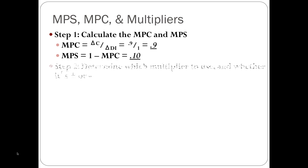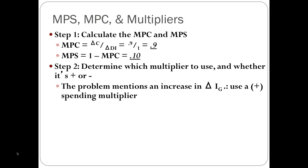Next, we have to determine which multiplier to use and whether it's positive or negative. We have an increase in gross private investment, so it's going to be a positive spending multiplier. Whether it's a change in consumption, gross private investment, or government spending — if it's an increase — you're using the spending multiplier. If the problem mentions taxation, it's the tax multiplier. Net exports also uses the spending multiplier.